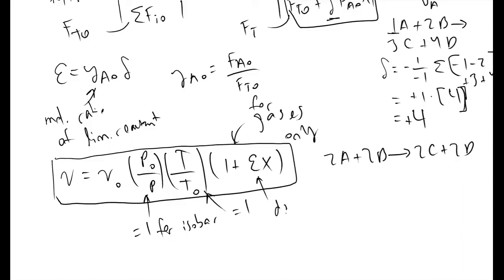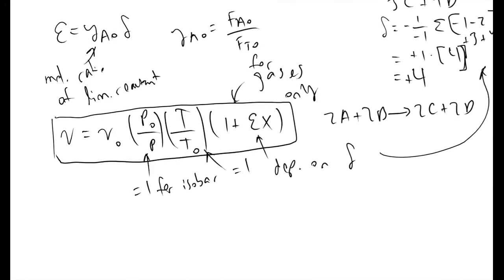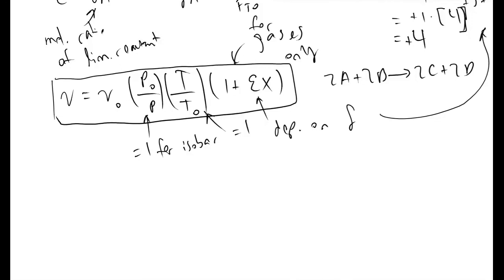This depends on the value of delta that we calculated above. The reason we would want to find what our volumetric flow rate V is, is because we can now figure out what the concentration is from our outlet molar flow rate, or our molar flow rate at a particular conversion.